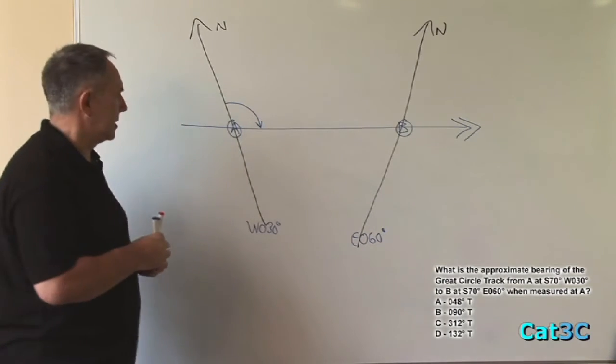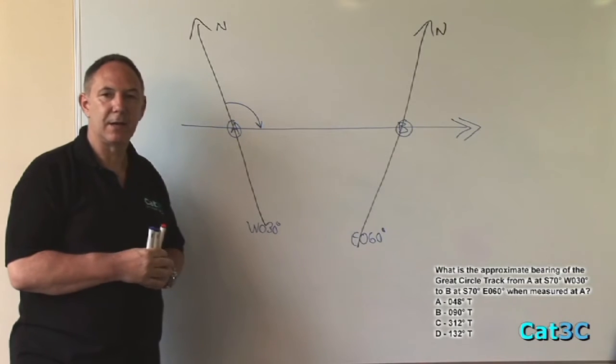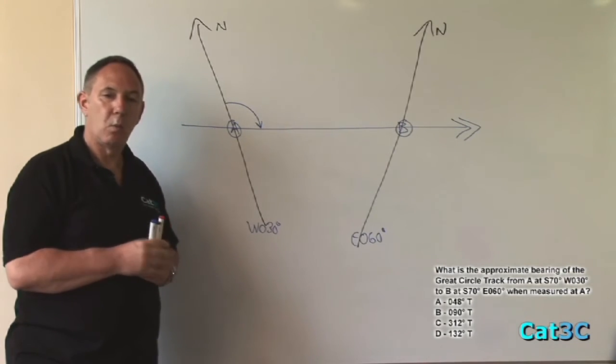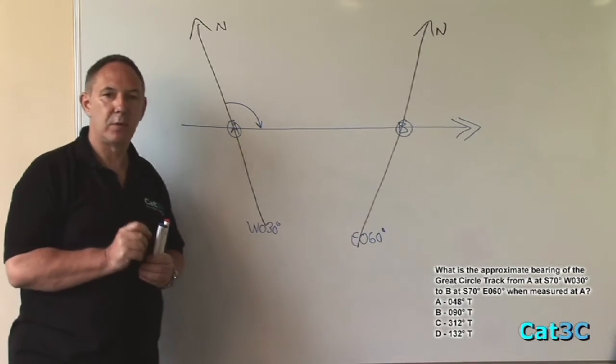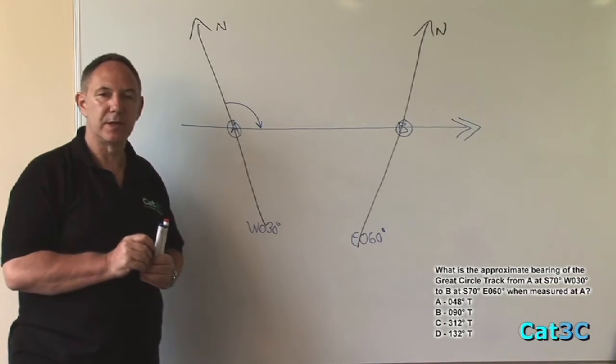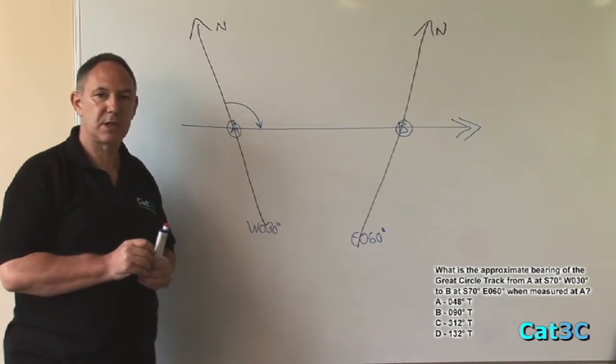But how are we going to calculate it? We haven't been given any angles to start with. What we can notice, though, is that both A and B are on the same latitude. Both are at South 70.